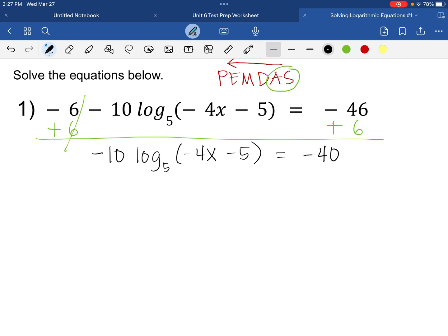That will leave us with negative 10 log of negative 4x minus 5 with base 5 equals negative 40. Now, again, our goal is to isolate x. We have a coefficient that is negative 10. We want to get rid of this negative 10 right here.